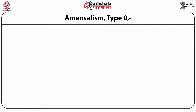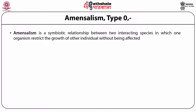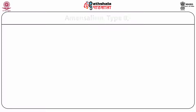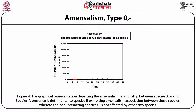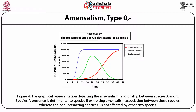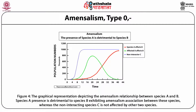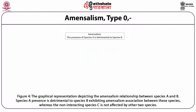Amensalism. Type: zero-negative. Amensalism is a symbiotic relationship between two interacting species in which one organism restricts the growth of another individual without being affected itself. It is a biological association of negative and zero type. The common process of growth inhibition is the secretion of a special chemical compound by one living organism as part of its normal metabolic process that acts detrimentally to another. This figure represents the graphical depiction of the amensalism relationship between species A and B: species A's presence is detrimental to species B, exhibiting amensalism.